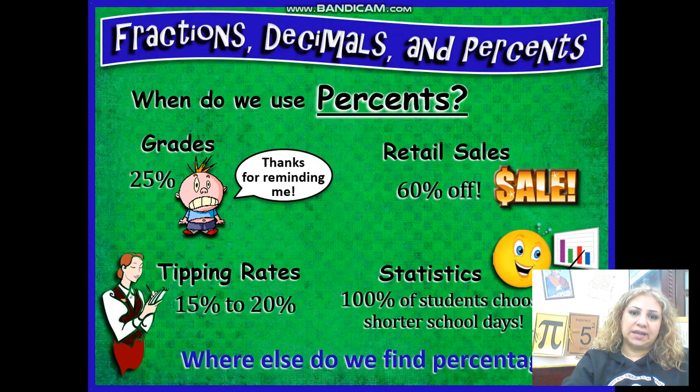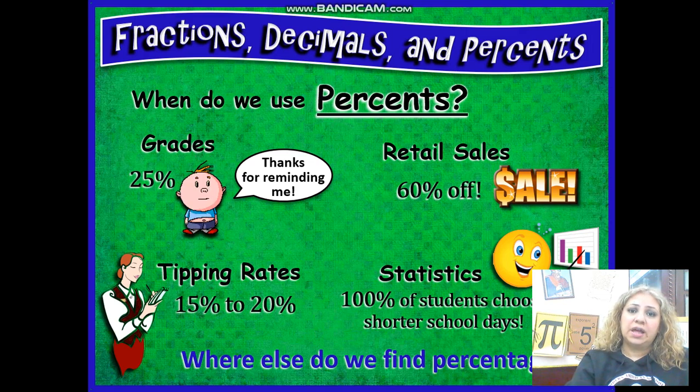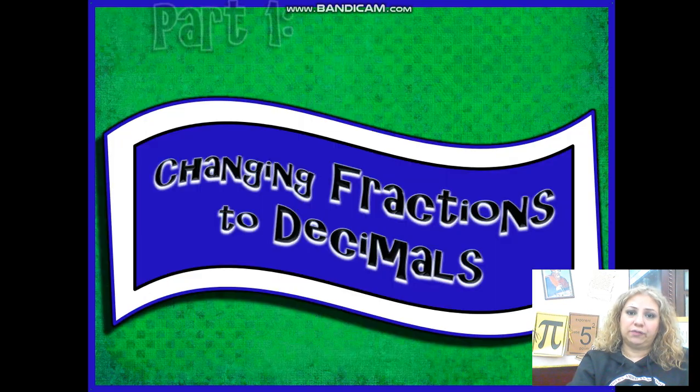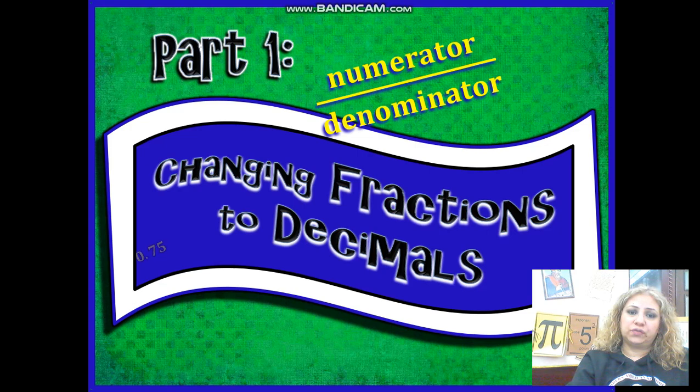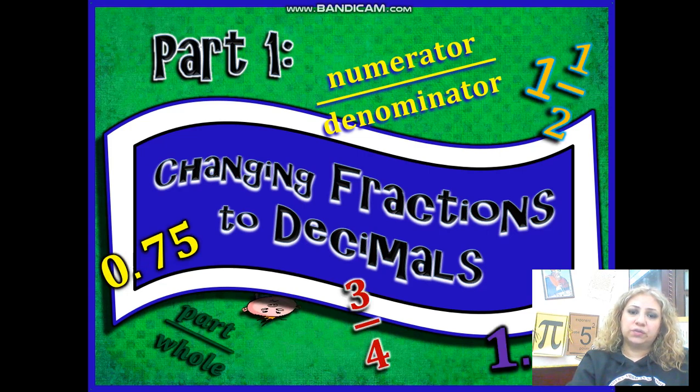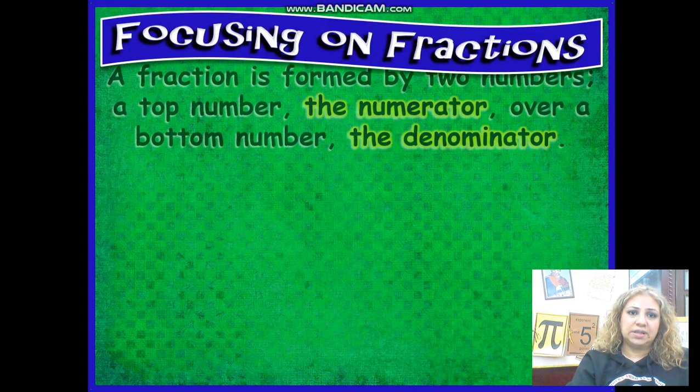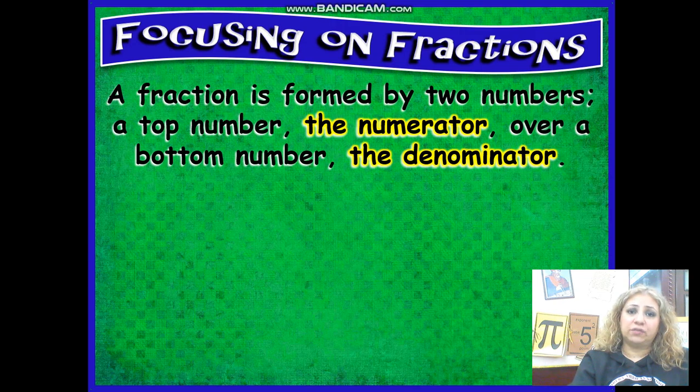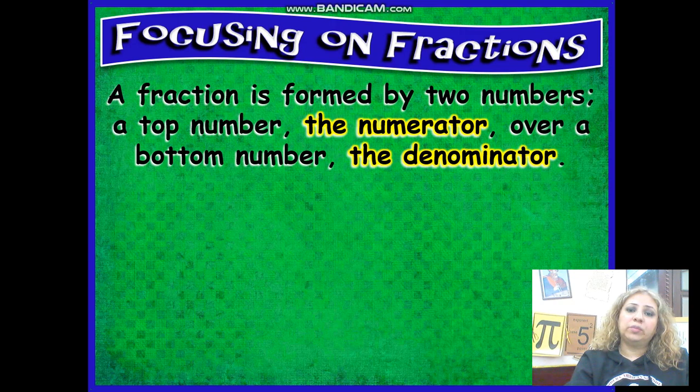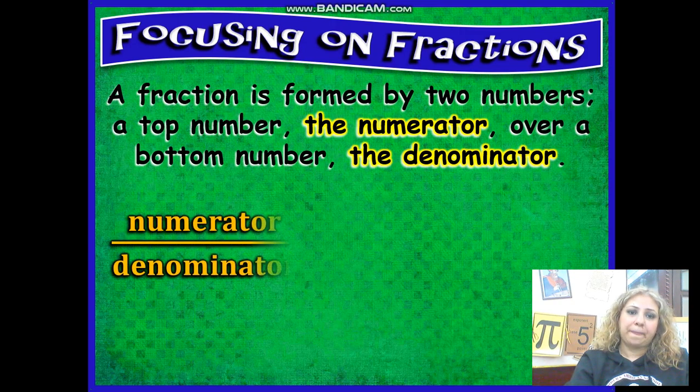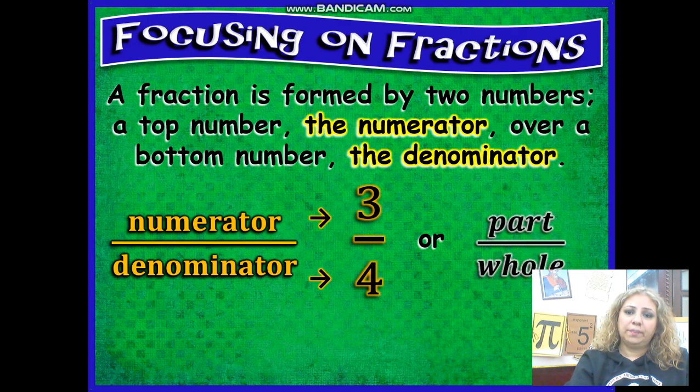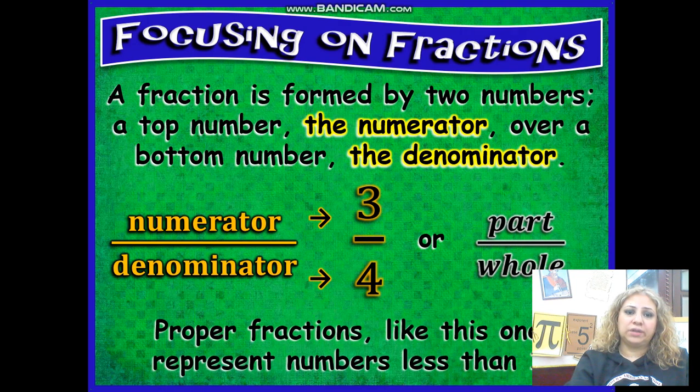So this is an introduction to know the difference between fractions, decimals and percents and where we find them in our real life. Of course we can change fractions to decimals, decimals to fractions and percents. Focusing on fractions, a fraction is formed by two numbers: a top number called a numerator over a bottom number called the denominator. Numerator, denominator, three fourths, or part of whole, this is called a fraction.